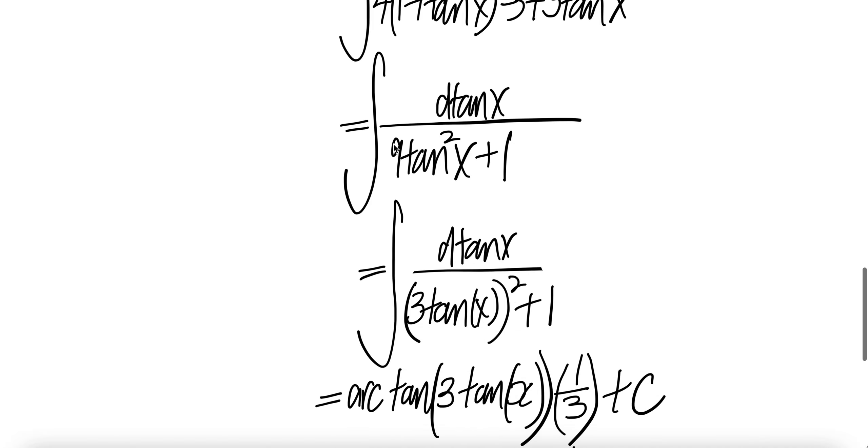Now we can push the 9 into the square. You get 3 tangent x whole thing square. Square of 3 is 9. Square of tangent x is tangent square x.